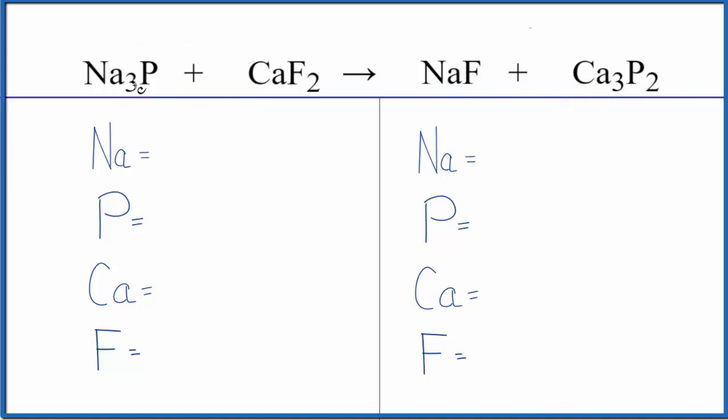Let's balance the equation. We have three sodium atoms, one phosphorus, one calcium, and two fluorine atoms. Product side, one sodium. Then we have two of these phosphorus atoms, three calcium, one fluoride.